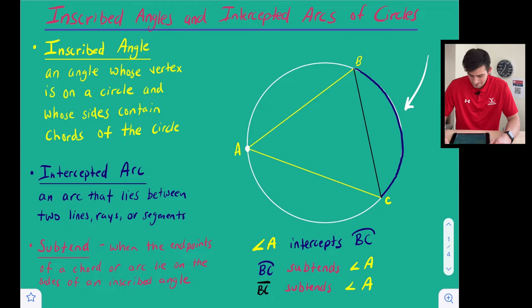And lastly we have this word subtend. So subtend just means when the endpoints of a chord or arc lie on the sides of an inscribed angle. So that's what subtend means. So if we look at the bottom of our circle here we can use intercept and subtend to describe what's happening in our circle.